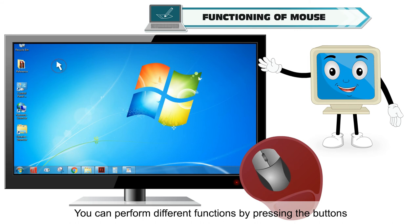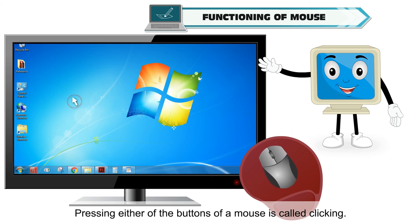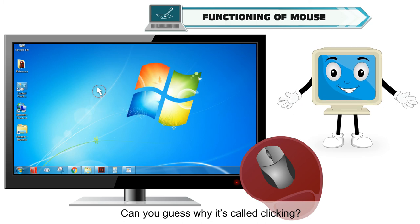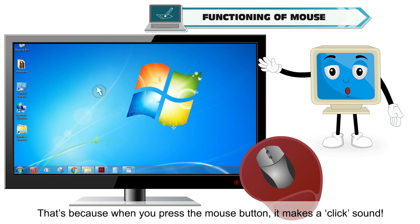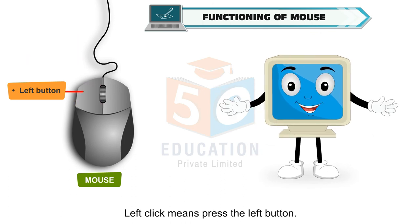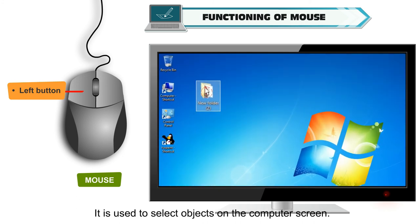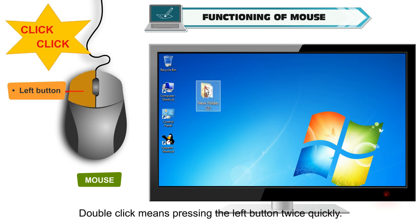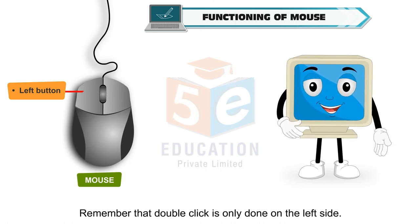You can perform different functions by pressing the buttons of the mouse in different ways. Pressing either of the buttons of a mouse is called clicking — it's called clicking because when you press the mouse button, it makes a click sound. Left click means press the left button. Single click is when you press and immediately release the left button once; it is used to select objects on the computer screen. Double click means pressing the left button twice quickly, and it helps us to open objects on the screen. Remember that double click is only done on the left side.